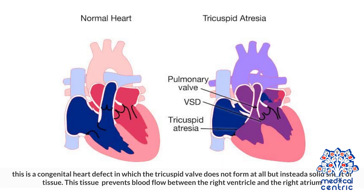Tricuspid atresia is a congenital heart defect in which the tricuspid valve does not form at all, but instead is a solid sheet of tissue. This tissue prevents blood flow between the right ventricle and the right atrium.